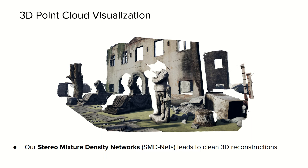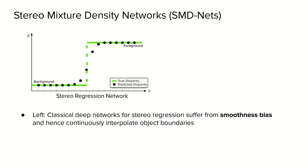While classical deep networks for stereo regression suffer from smoothness bias and are not able to represent sharp disparity discontinuities, the proposed Stereo Mixture Density Networks effectively address this issue by predicting sharp boundaries and thus clean 3D reconstructions. Here we illustrate the differences between classical deep networks for stereo regression and our proposed method.